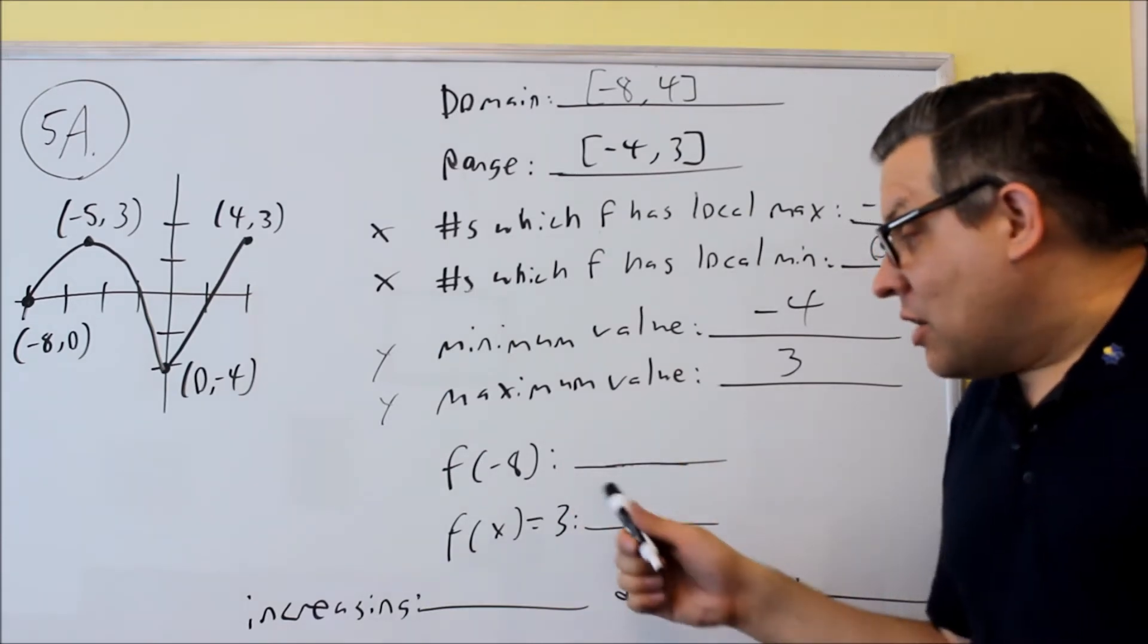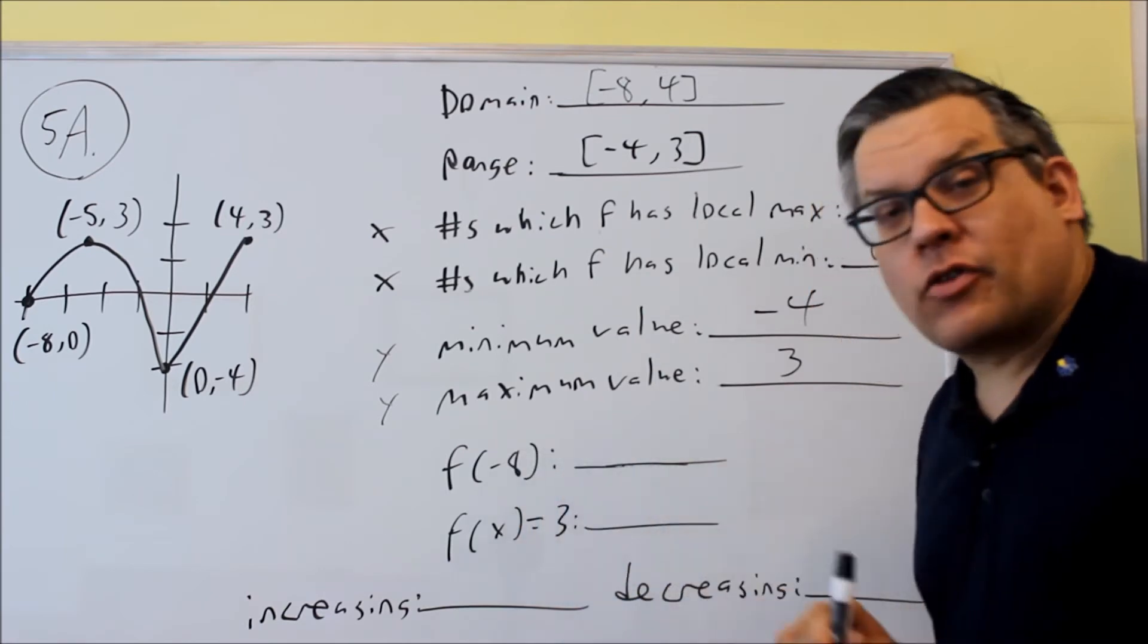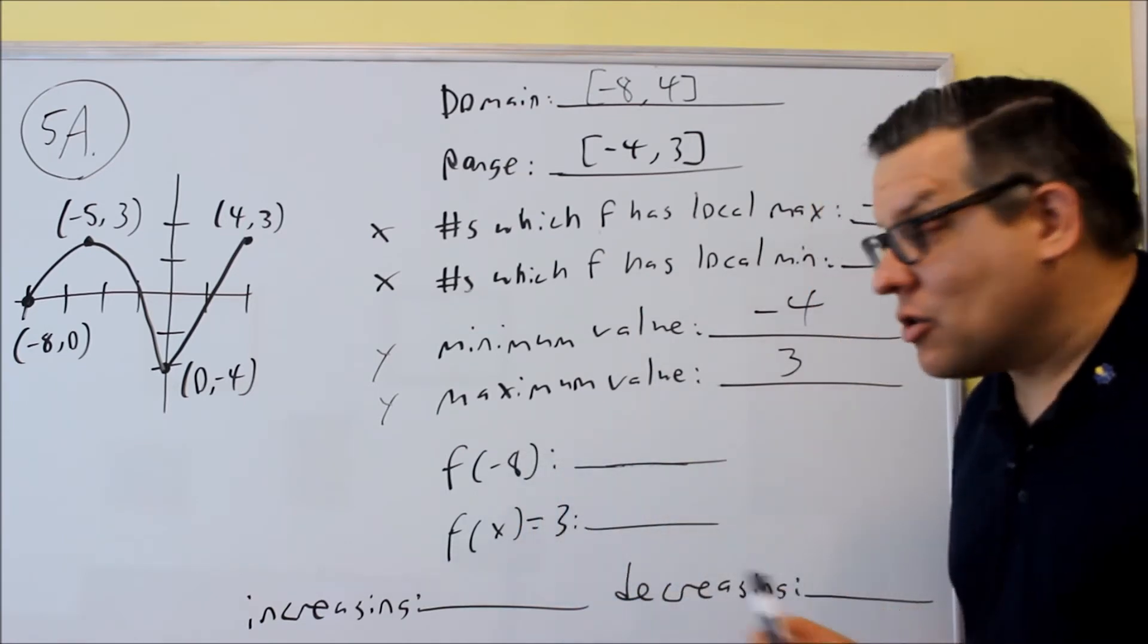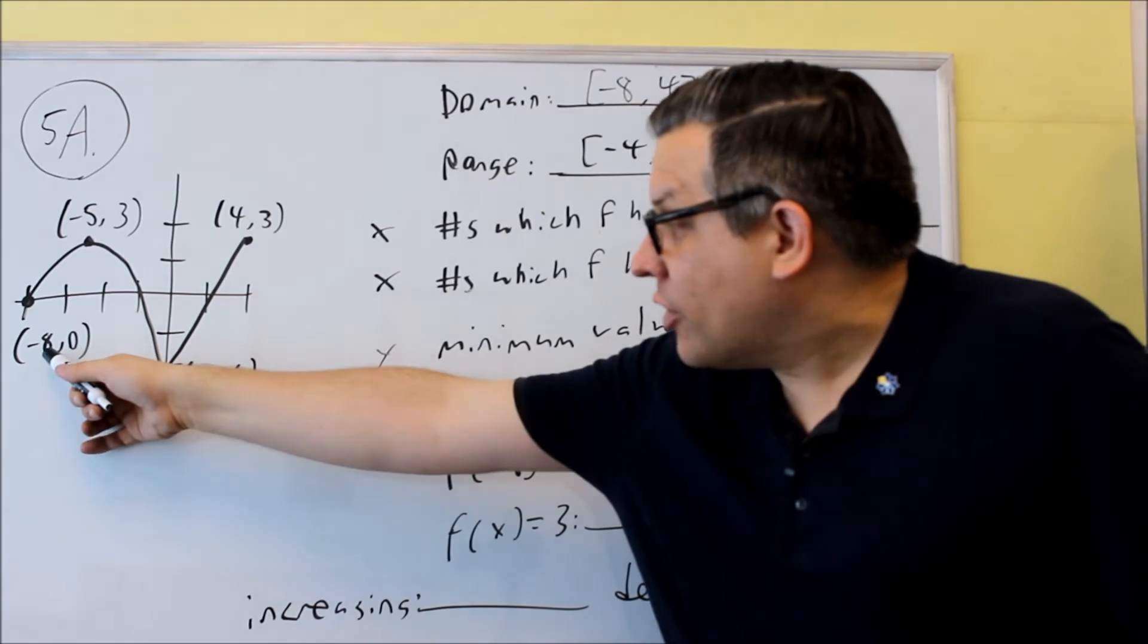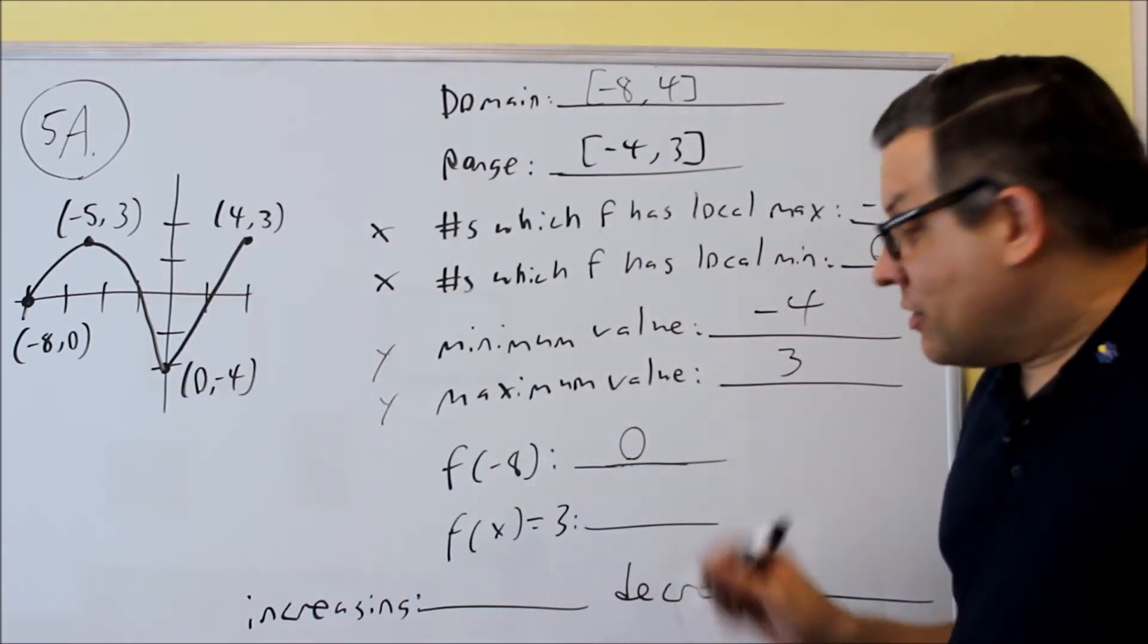f of negative 8 is saying, what is the y value when x is equal to whatever number is inside the parentheses? So when x is negative 8, what's the y value? If I go over there at negative 8, I get a y value of 0.